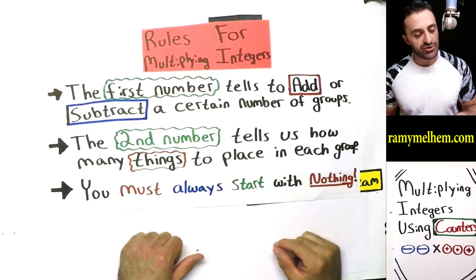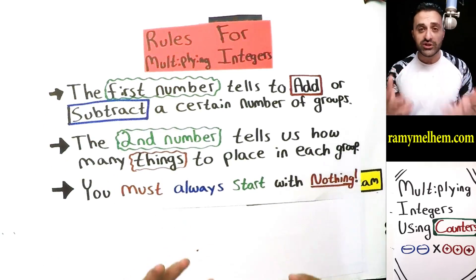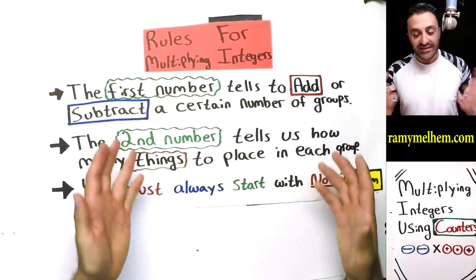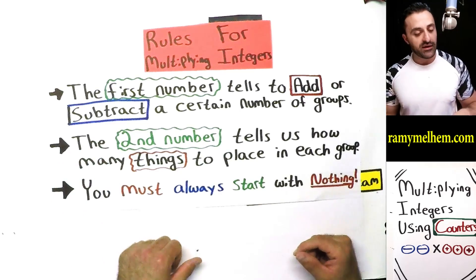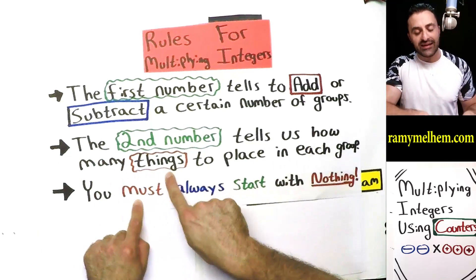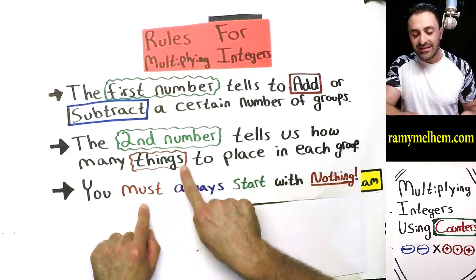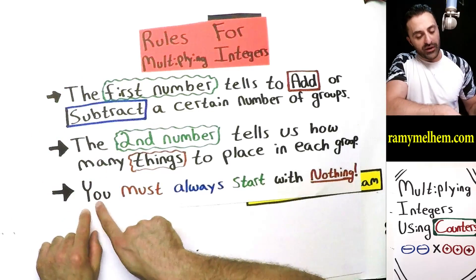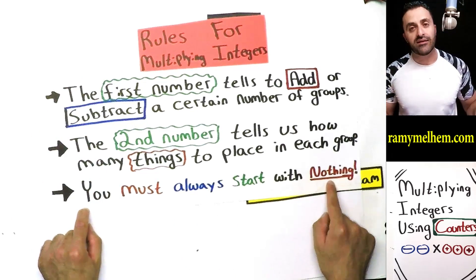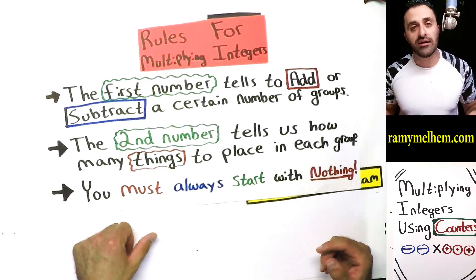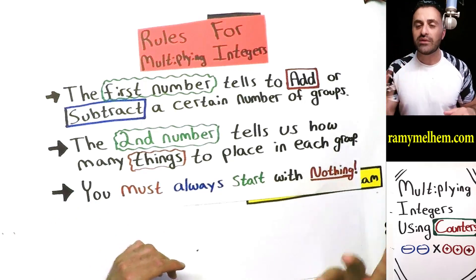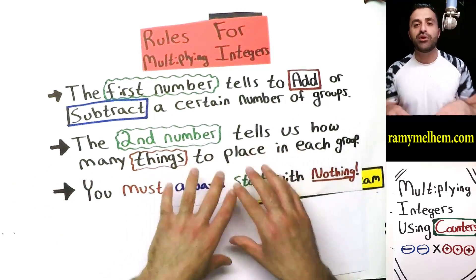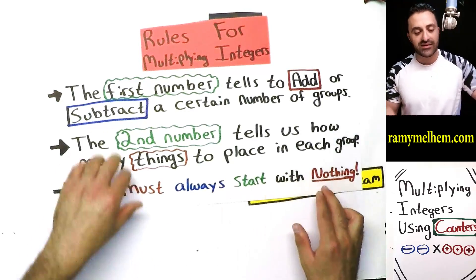Here are the rules for multiplying integers. The first number tells us to either add or subtract a certain number of groups. The second number tells us how many things or players to place inside each group or team. The third rule: you must always start with nothing. Back in grade three or four, when a teacher said 'do three times two — use chips, start building it,' you always had nothing on your table and then started putting things down. You've got to start with nothing.